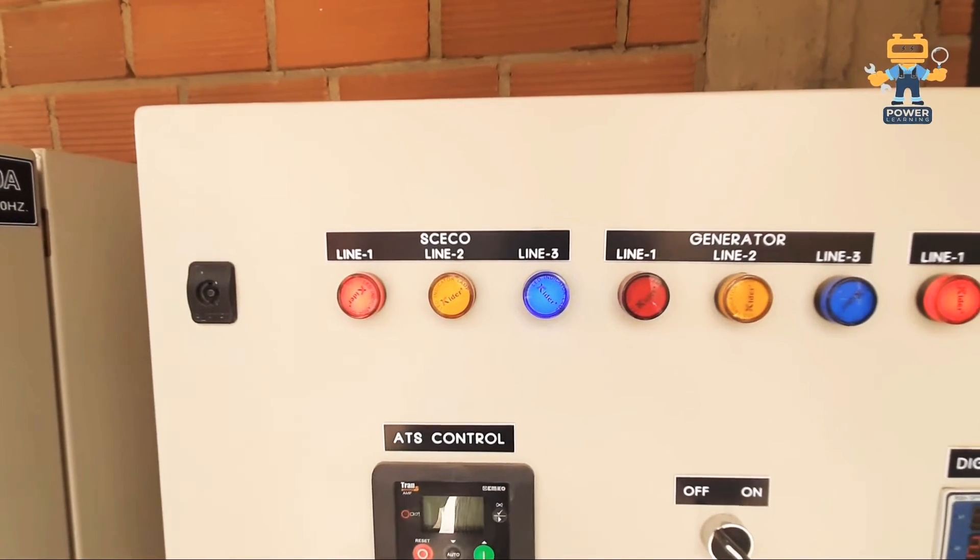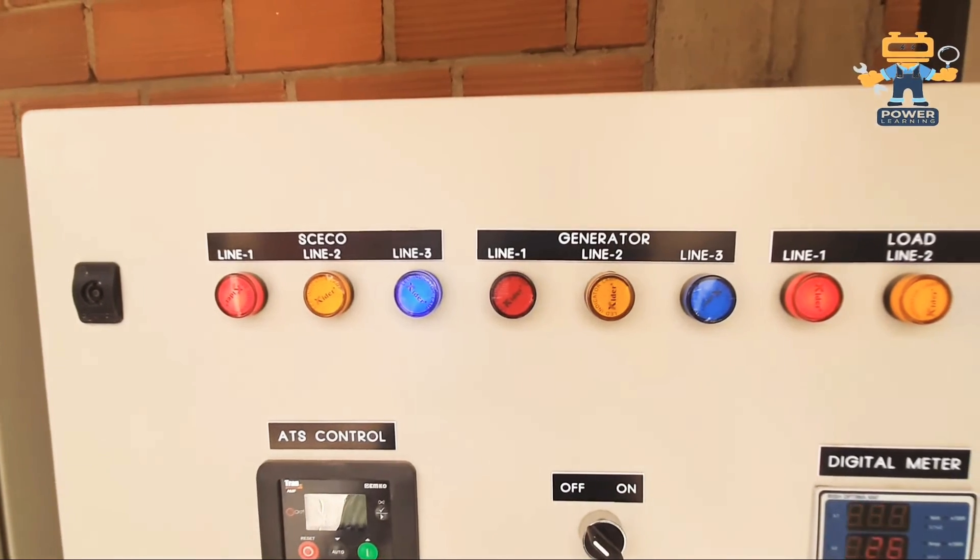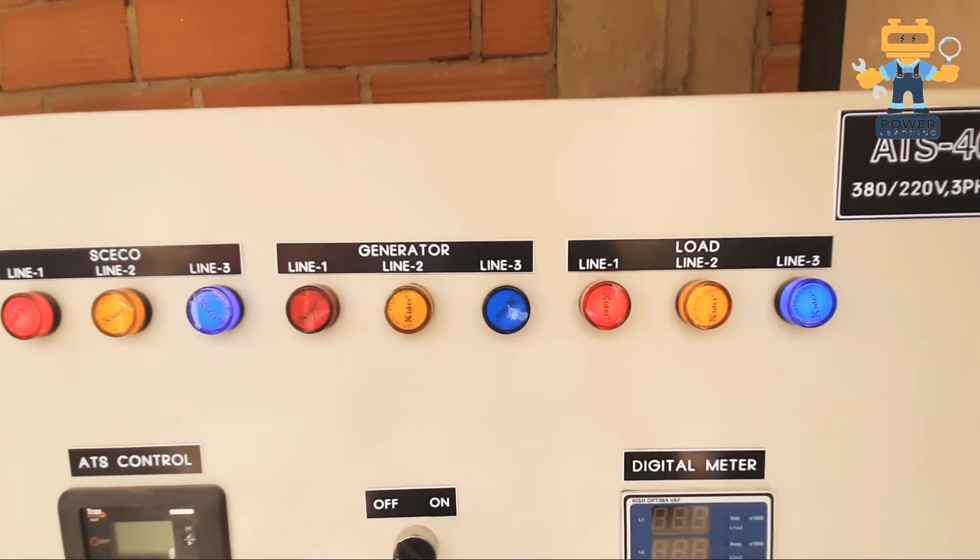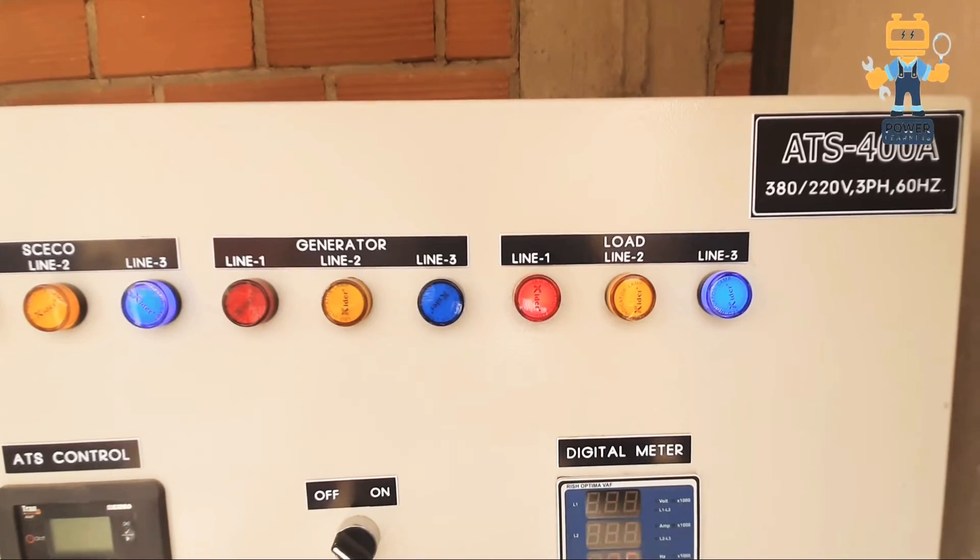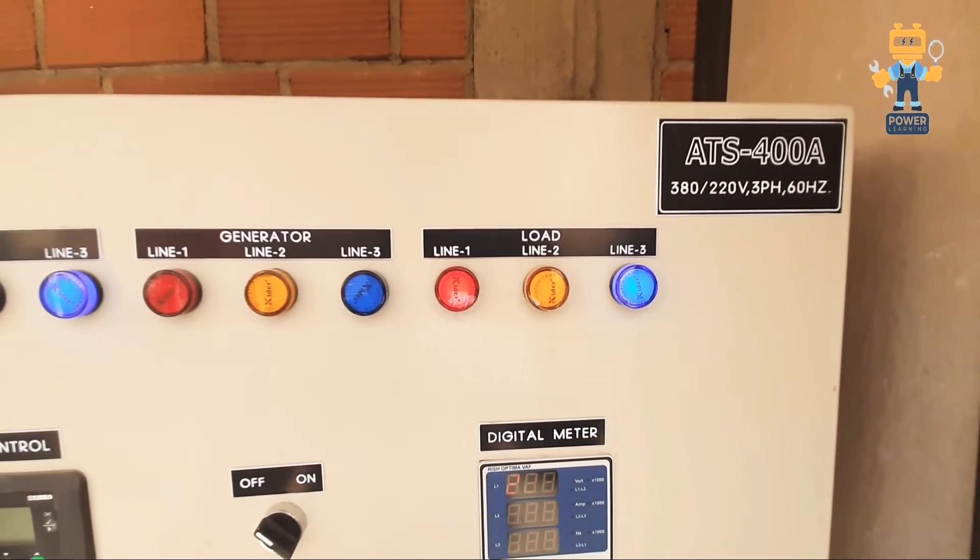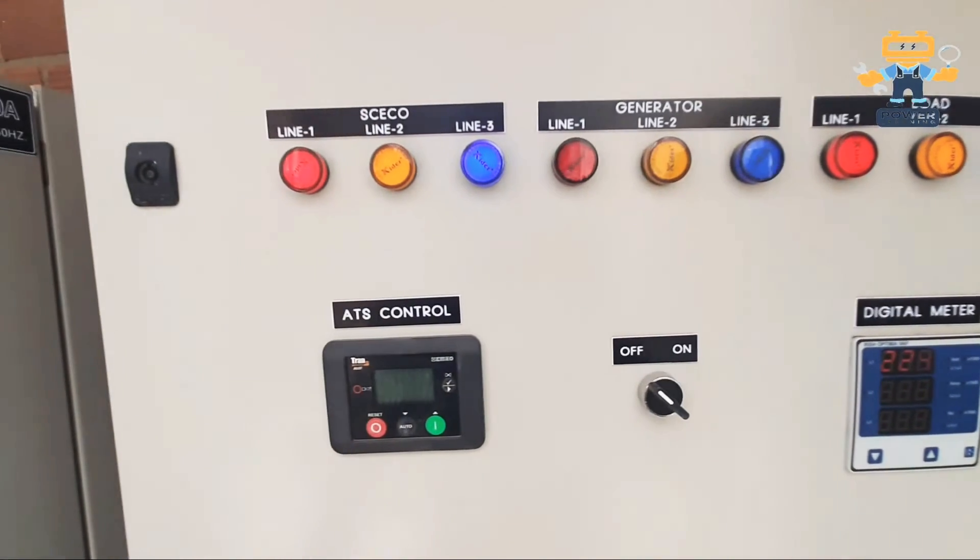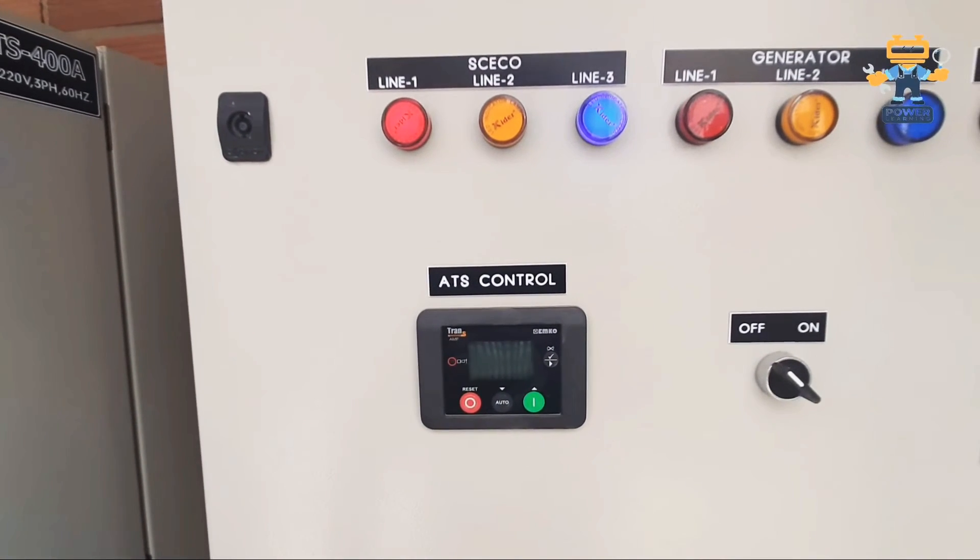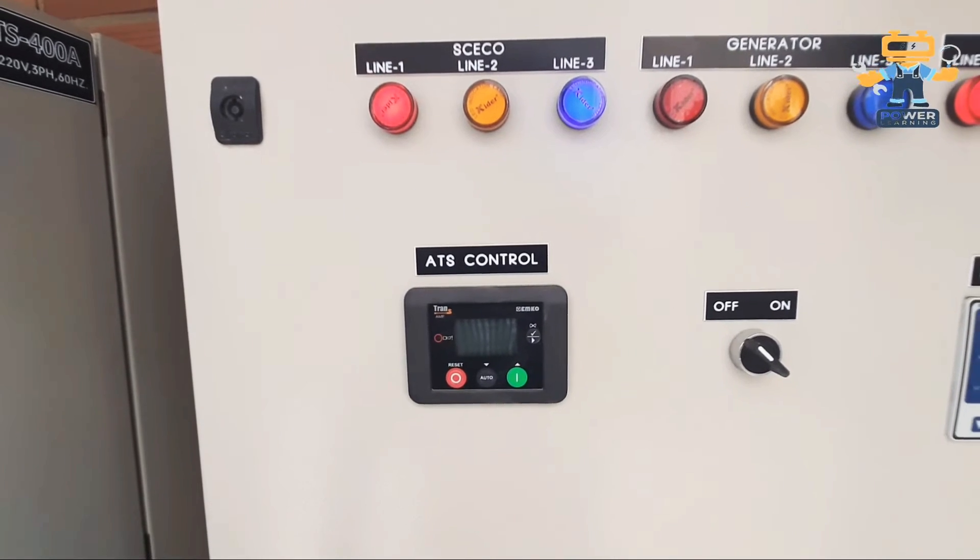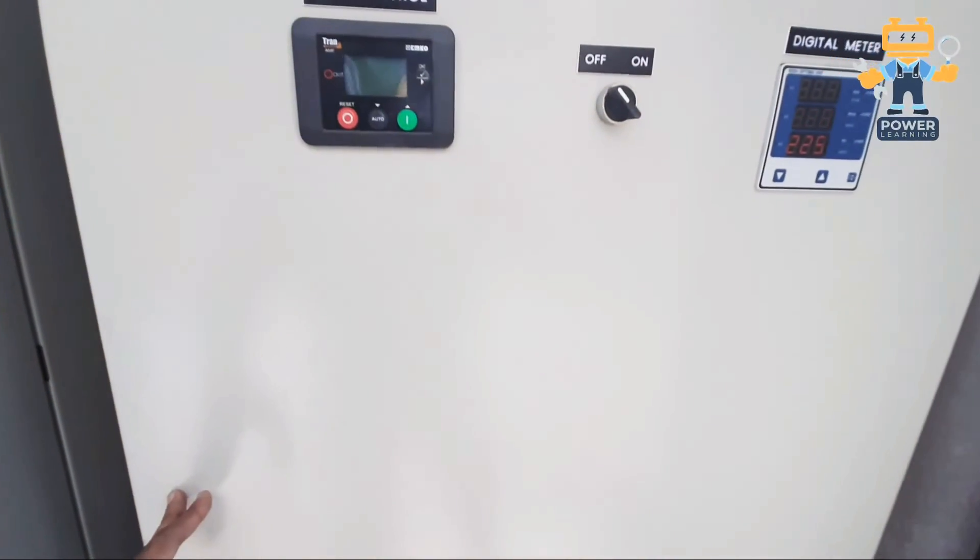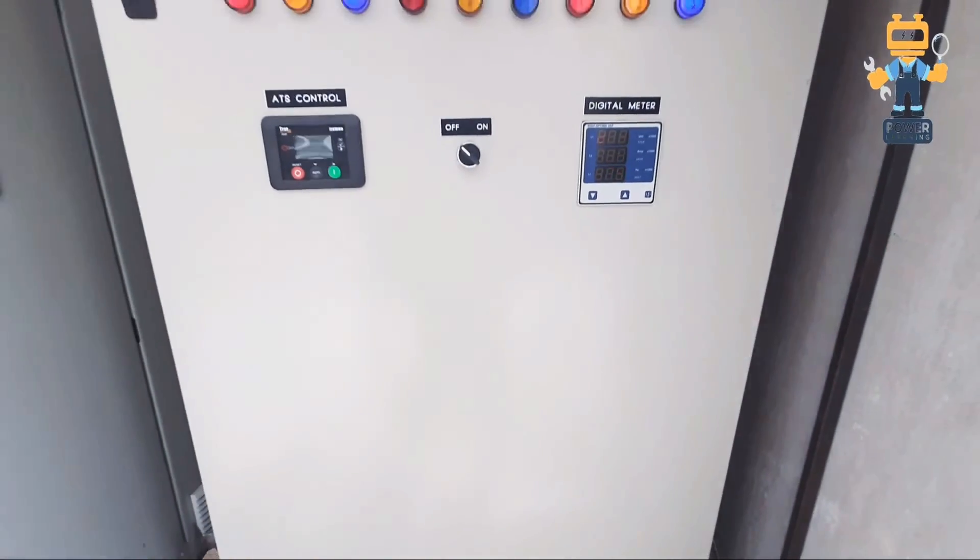So now you see from the outside of the panel. Here we have three indications for KESCO which is our mains, next three for generator, and then last three is our load. ATS 400, 300 by 380 by 220 volt, three phase, 60 hertz. Here we have our ATS controller and this is main selector switch for on and off the power, and our digital multimeter.